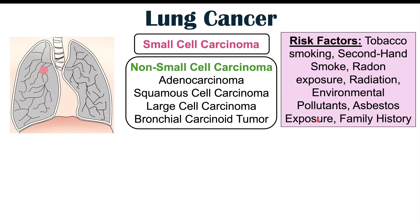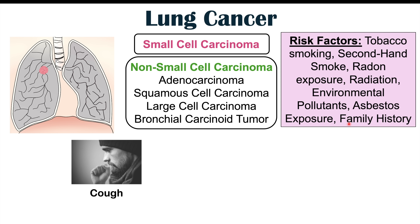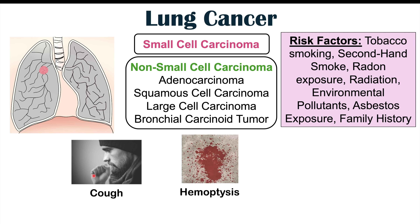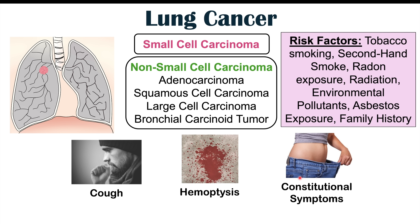Asbestos exposure increases the risk of adenocarcinoma and also mesothelioma. Family history is another risk factor — if you have a family history of lung cancer, you're more likely to develop it yourself. Common symptoms of lung cancer include cough, hemoptysis or coughing up blood, and constitutional symptoms including fatigue and weight loss.